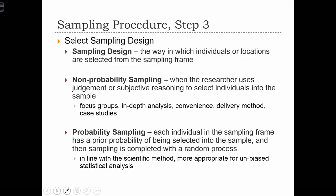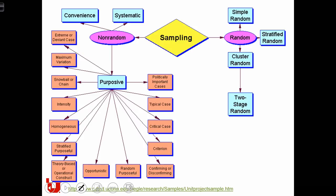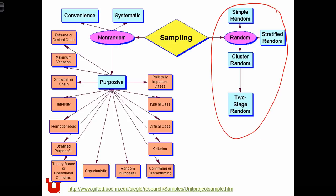For probability sampling, each individual in the sampling frame has some probability of being selected into the sample, and sampling is completed with a random process. This is in line with the scientific method, because inferential statistics require the use of some sort of probability sampling. In this figure, we can see examples of both random and non-random sampling procedures. We're going to be dealing mostly with random sampling procedures in this class, because these are required by inferential statistics.